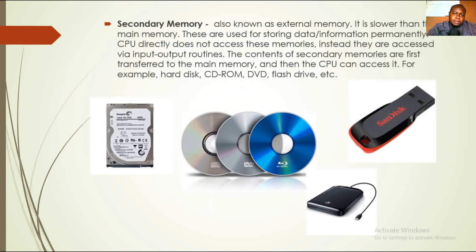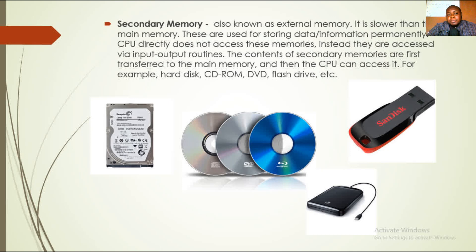Secondary memory is also known as external memory. It is slower than the main memory and is used for storing data and information permanently. The CPU does not directly access these memories; instead, they are accessed via built-in input/output routines. The contents of secondary memory are first transferred to the primary memory before the CPU can access it. Examples include the hard disk, CD-ROM, DVD, and flash drive.